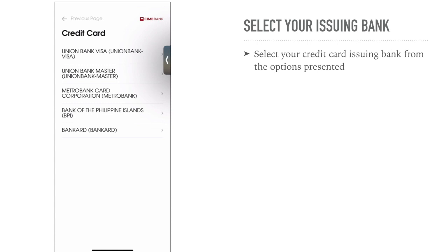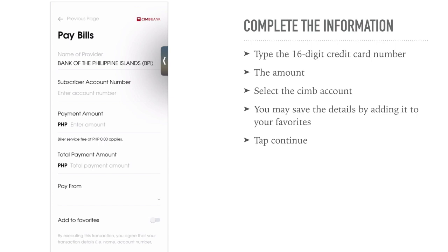Choose your credit card from the list, and after you choose your credit card or issuing bank, you will be redirected to a page where you need to put in information like the account number — which is the sixteen digits of your card number — and then the amount you'd like to pay. The total payment amount will be auto-populated afterwards, and you can also choose to pay it from any of your CIMB account.